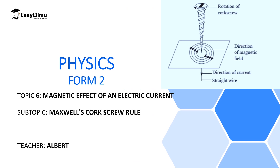Welcome to ECLUMU Learning Simplified and welcome to this lesson. In the previous lessons we discussed three rules that can be used to determine the direction of the magnetic field along a conductor carrying current: the Oersted experiment, Ampere's swimming rule, and Fleming's right hand grip rule for a straight conductor carrying current. Now in this lesson we are going to discuss another rule that gives us absolutely the same result as those three rules.